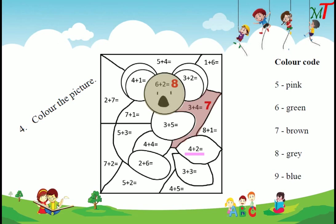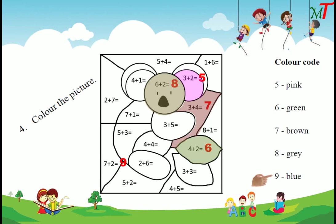Next example: 4 plus 2 — the sum is 6. The color code for 6 is green, so we color the 4 plus 2 box green. For example, 3 plus 2 — the sum is 5, and the color code for 5 is pink, so we color the 3 plus 2 box pink. One more example: 7 plus 2 — the sum equals 9, and the color code for 9 is blue, so the 7 plus 2 box is colored blue.